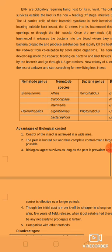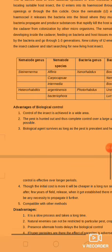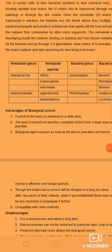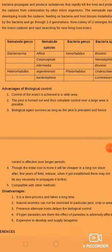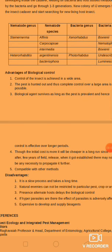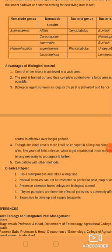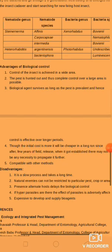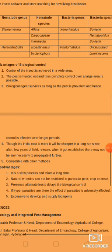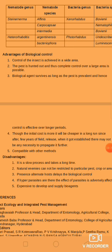The advantages of biological control: control is achieved over a wider area as the pest is hunted out, thus complete control over a large area is possible. Biological control lasts as long as the pest is prevalent, and hence control is effective over longer periods. Though the initial cost is more, it will be cheaper in the long run, since after a few years of field release the control agent is established.